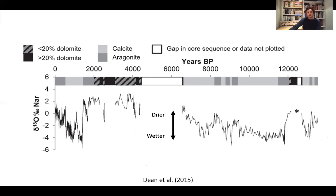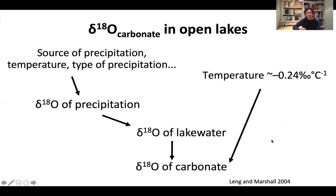So we can use the oxygen isotope values from the carbonate in the lake sediments in order to reconstruct changes in the precipitation-evaporation ratio — wet-dry climate going back through time. In particular, we found that in the late Holocene it was quite dry, whereas in the early Holocene it was quite wet.